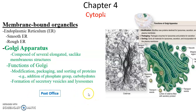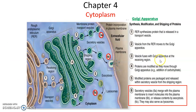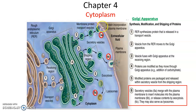The Golgi apparatus is kind of like the post office — it receives, processes, packages, and sends out. Transport vesicles go from the rough endoplasmic reticulum to the various layers of the Golgi apparatus. Some of those become vesicles that travel to the plasma membrane, fusing with it and carrying membrane-bound proteins. Some carry secretory vesicles that fuse with the plasma membrane and secrete proteins. And some of them will become lysosomes.